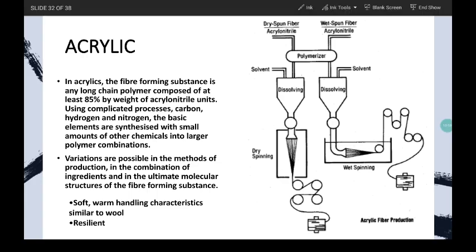Next fiber is acrylic. In acrylic, the fiber-forming substance is any long-chain polymer composed of at least 85 percent by weight of acrylonitrile units. Using complicated processes, carbon, hydrogen, and nitrogen, the basic elements, are synthesized with a small amount of other chemicals into larger polymer combinations. Variations are possible in the method of production, in the combination of ingredients, and in the ultimate molecular structure of the fiber-forming substance. It is soft, with warm handling characteristics similar to wool.